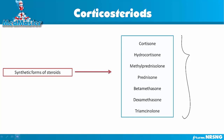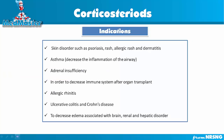Since we know the function of these glucocorticoids and mineralocorticoids, we can relate the indications — which disease conditions we can use this medication for. Skin disorders such as psoriasis, rash, allergic reaction, and dermatitis. We know one function of glucocorticoids is to decrease inflammation and immune response, so psoriasis, rash, allergic reaction, and dermatitis are kinds of inflammation, and this medication will help decrease that inflammation.